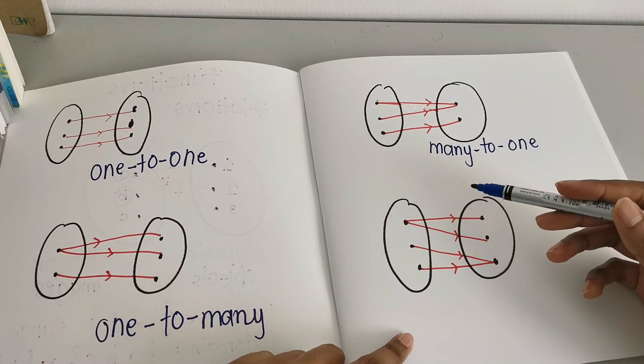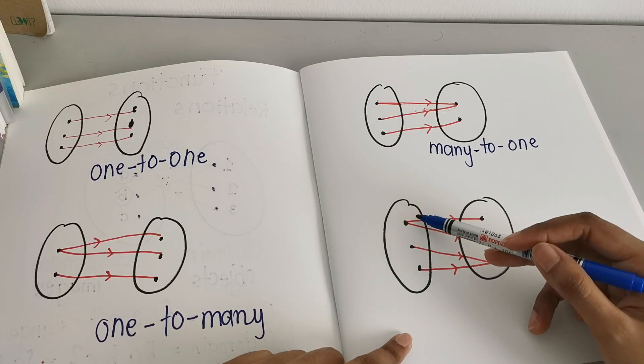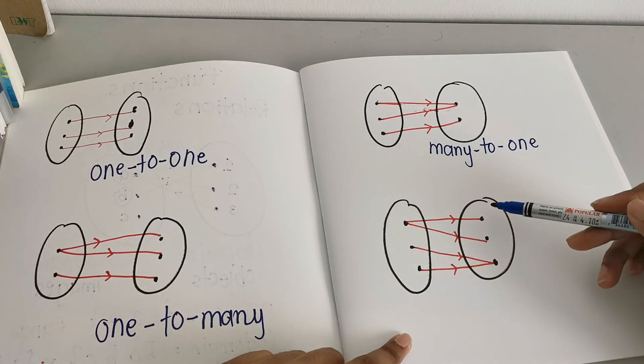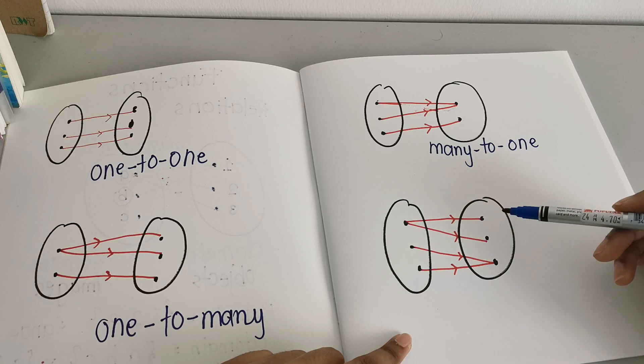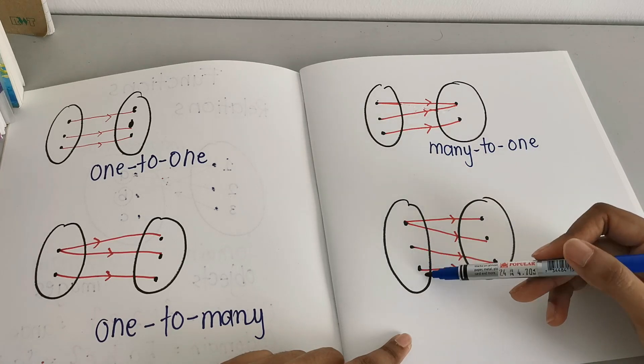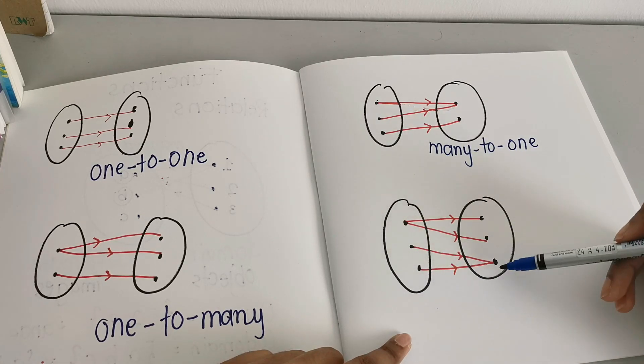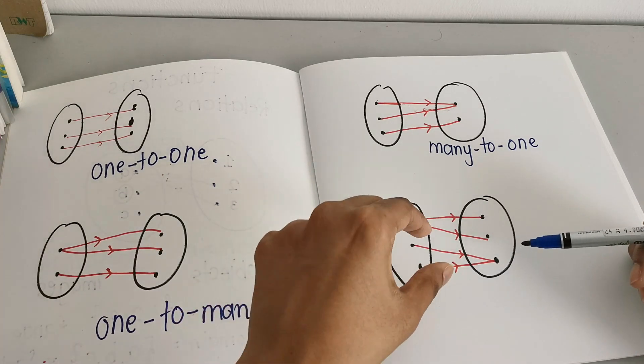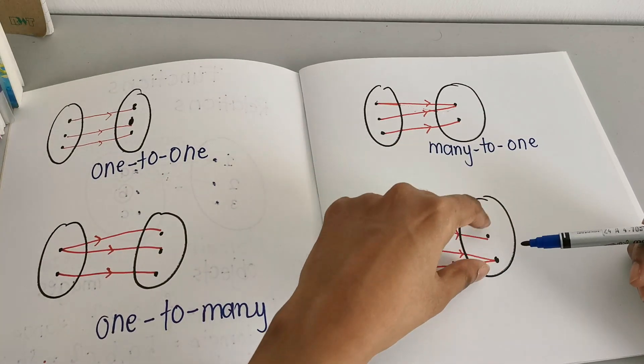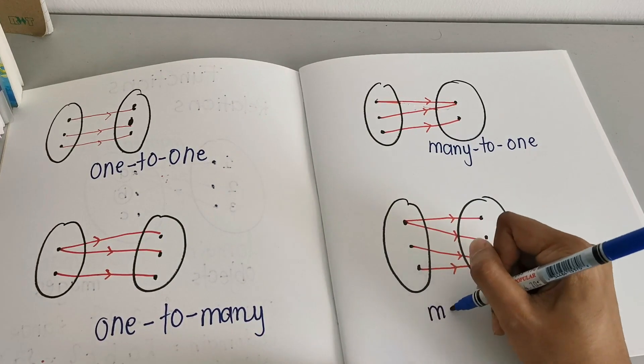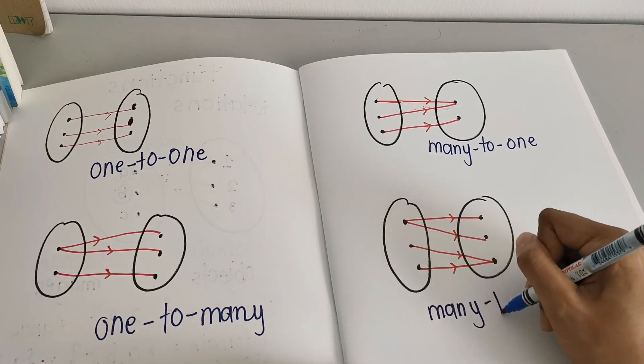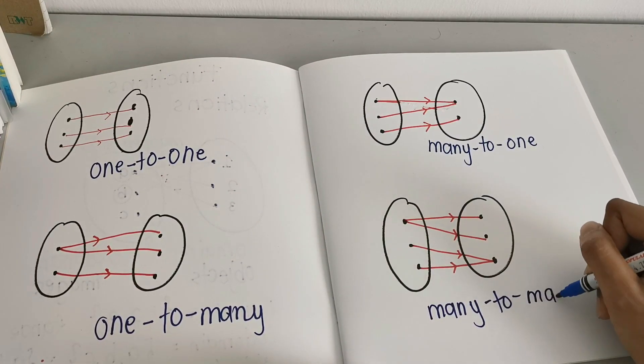And the last one, but not least, we have here 1 object mapped to 2 different images. Here we have 2 objects mapped to 1 image. So here, we have many to many because we have both ways going on here, so many to many relation.